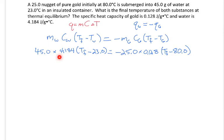So the first thing I'll do is multiply 45 times 4.184, and then distribute that into parentheses. And then do the same thing, I'll multiply negative 25 times 0.128, and then distribute that into this parentheses. So I multiply that result by T_f and by negative 80.